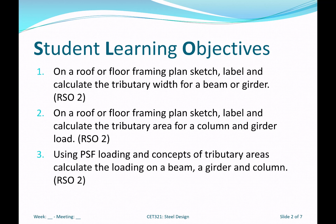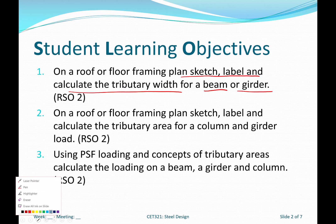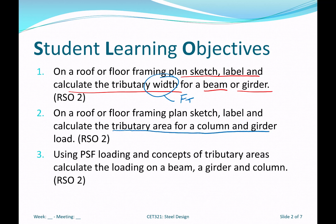When you look at a framing plan, I'd like you to be able to sketch, label, and calculate tributary widths for beams — and there really is a tributary width for a girder also. When you think tributary width, think one dimension, typically feet or meters. We also want to be able to calculate tributary area for columns and girder loads. Tributary area makes you think feet squared. Then we can take PSF loading — pounds per foot squared — and using tributary area or tributary width, generate loads for beams, girders, and columns.